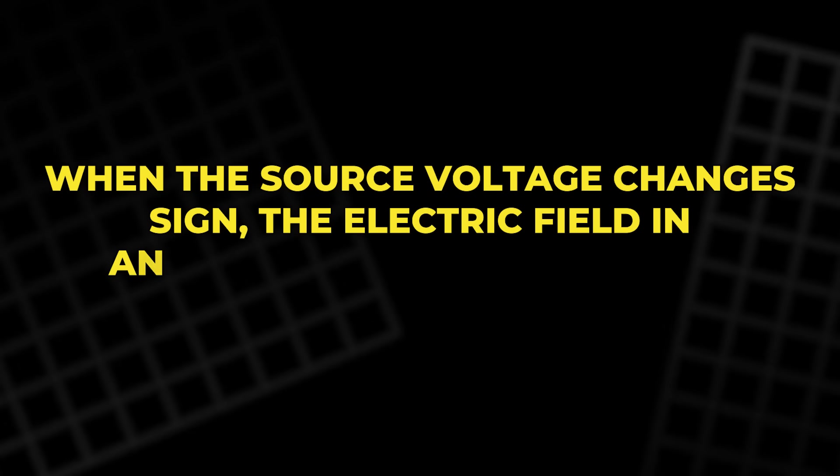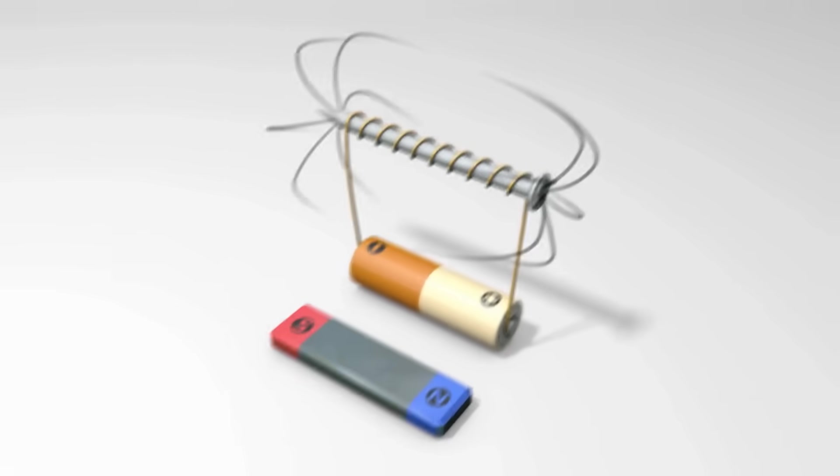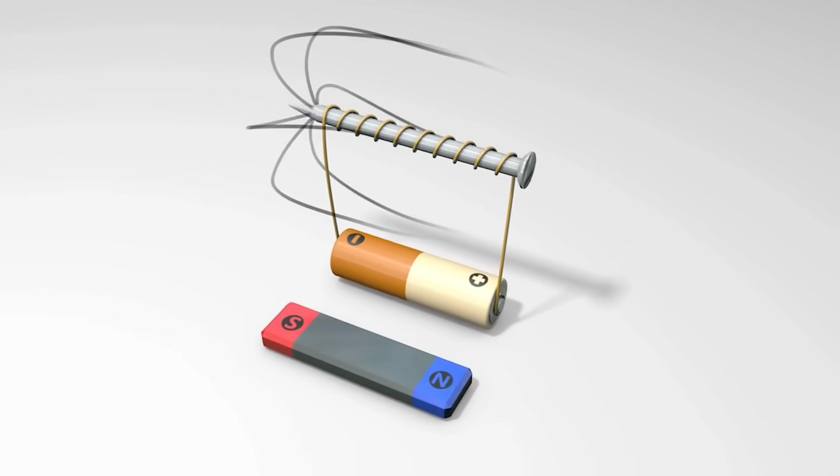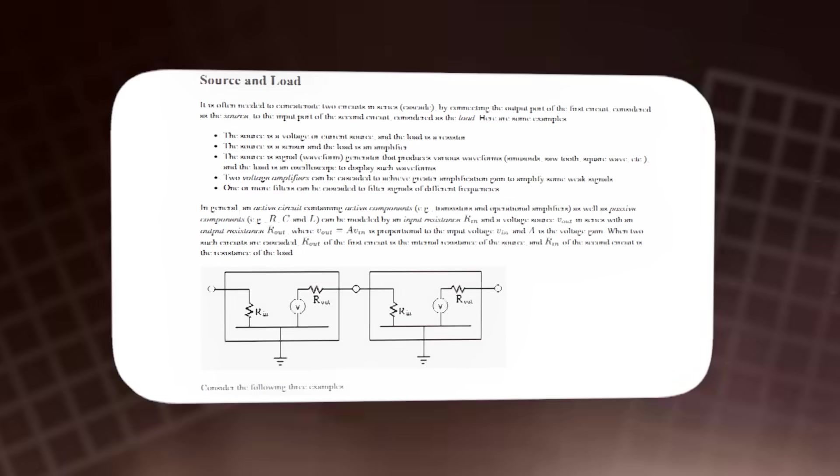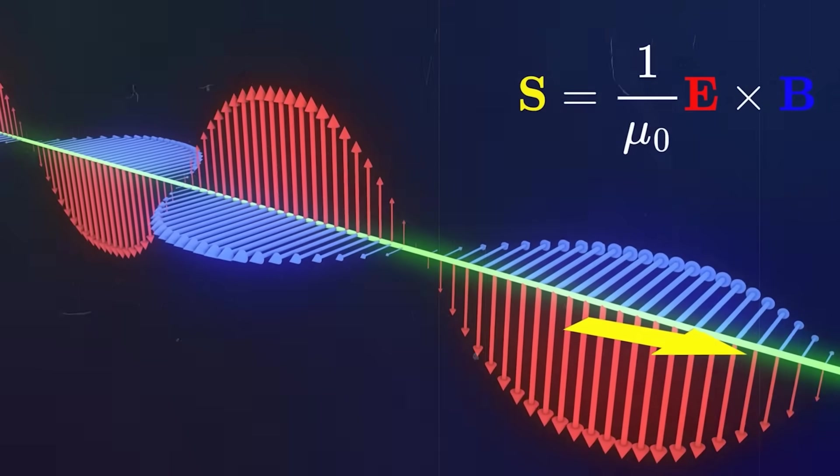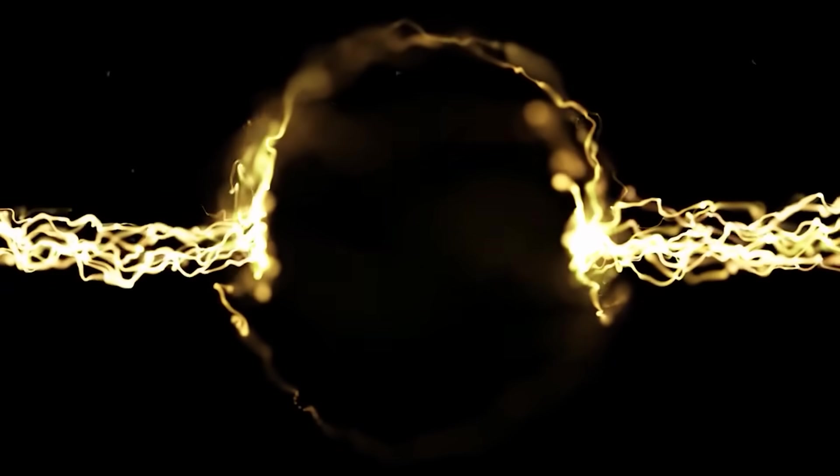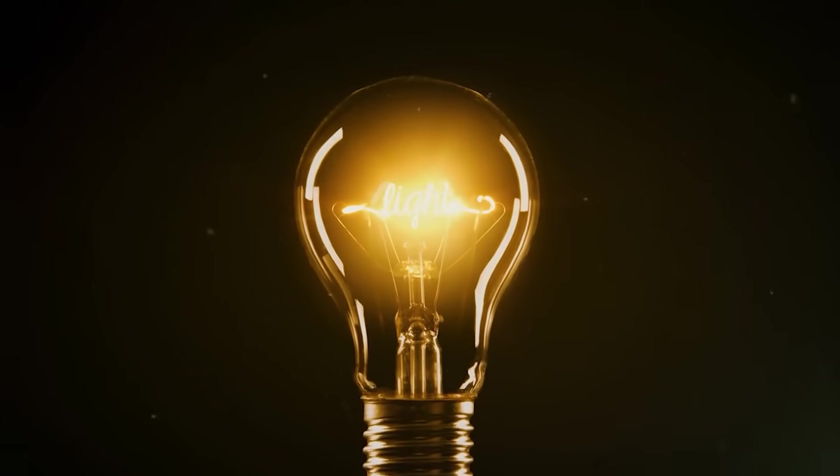The field picture answers cleanly. When the source voltage changes sign, the electric field in and around the conductors changes sign with it. The magnetic field created by the current also flips. Because both E and B reverse together, their cross product keeps pointing the same way for net energy delivery, from source toward load. At any instant, the Poynting vector still threads its way through the space around the line and into the device where energy is dissipated as heat, light or motion.